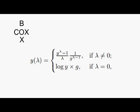Lambda is unknown and may be estimated by maximum likelihood, which turns out to be the same as minimising the residual sum of squares. The g is the geometric mean of y, and it's omitted in some presentations.